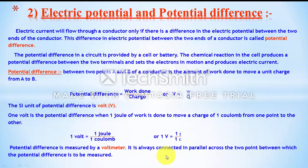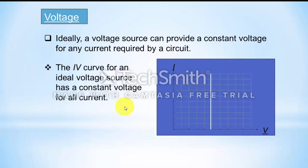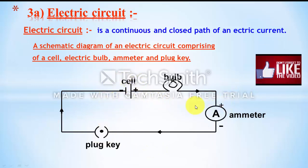Potential difference is measured by a voltmeter, which is always connected in parallel across the two points. For an ideal voltmeter, it should provide a constant voltage regardless of external resistance. An electric circuit is a continuous and closed path of electrical current. In this circuit, a cell, a valve, an ammeter, and a plug key are connected through a connecting wire. Current flows from the positive terminal via the valve and ammeter to the negative terminal.